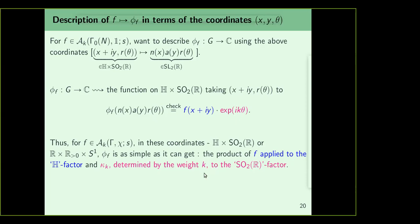There is a similar description for M_k(Gamma_0(N), chi), but there is also a y^{k/2} factor, which is not surprising because we thought of modular forms as generalized Maass forms by multiplying with y^{k/2}.